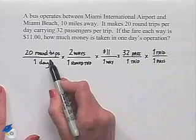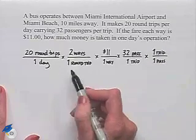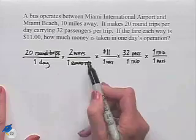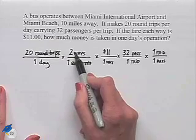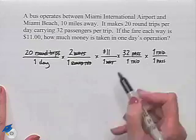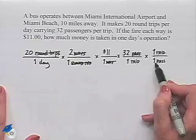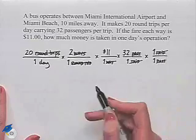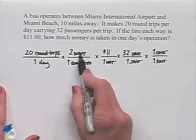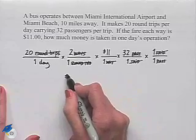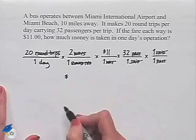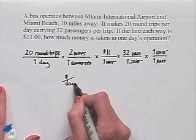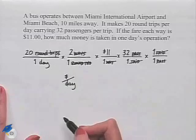Now, we're going to notice that our units here are going to cancel out. Our round trips will cancel with the round trip. Our way will cancel with the way. Passengers cancel with the passengers. Trip cancels with trip. So therefore, when we look at units, we end up in a numerator with dollars and in our denominator with days, so we'll end up coming up with the number of dollars per day.